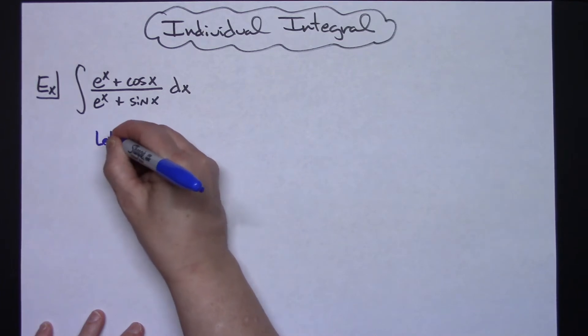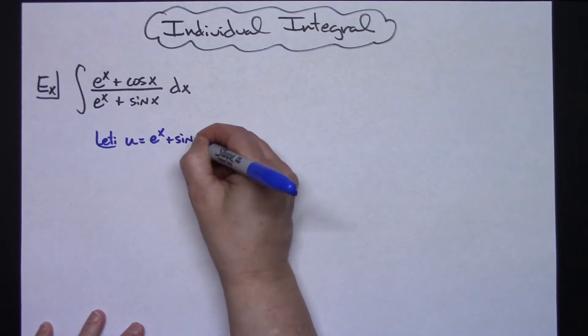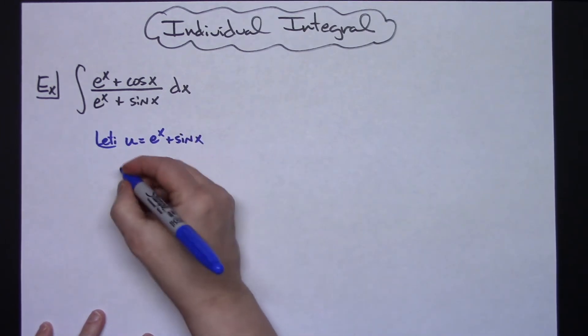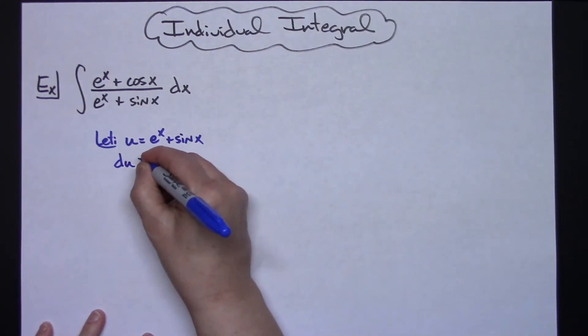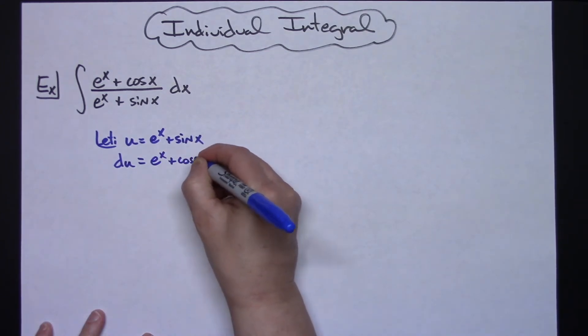So we're going to let u equal e to the x plus sine x. And then we'll take the derivative of both sides: du equals e to the x plus cosine x dx.